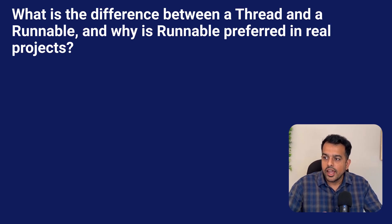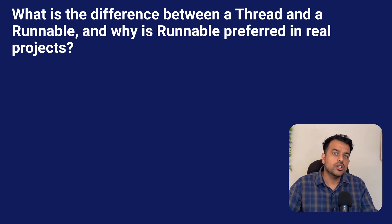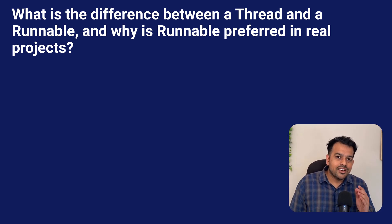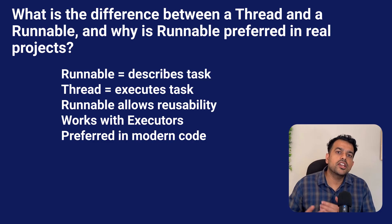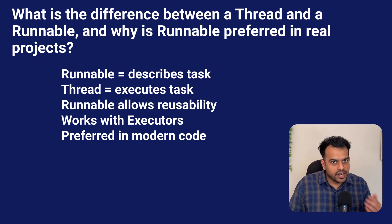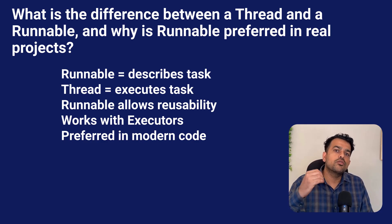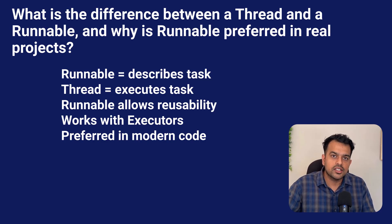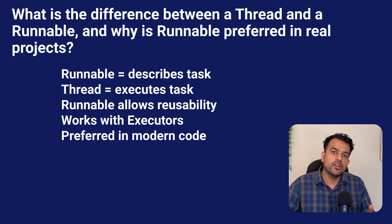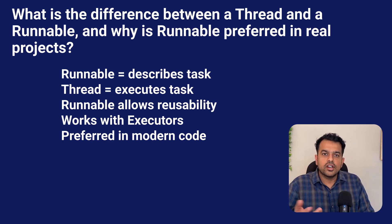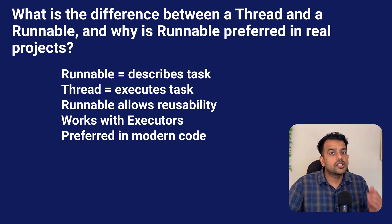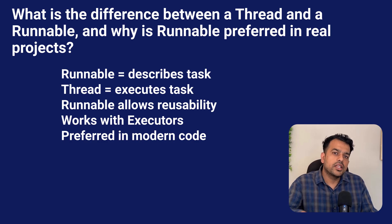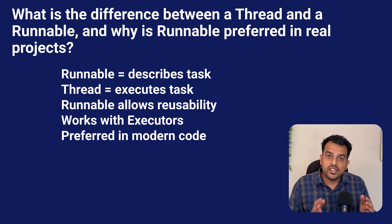The next question is: what is the difference between a Thread and a Runnable, and why is Runnable preferred in real projects? Thread and Runnable look similar but their roles are different. Runnable is just a task — it tells Java what work needs to be done. Thread is the actual execution unit — the one that runs the task. If you extend Thread, you cannot extend any other class because Java doesn't support multiple inheritance. Runnable solves this by giving you flexibility; you can implement the interface and still extend another class. In modern Java we rarely create threads manually — instead we use executor thread pools or async frameworks, and all these frameworks work directly with Runnable or Callable, not Thread. That's why Runnable is considered the cleaner, more scalable approach.